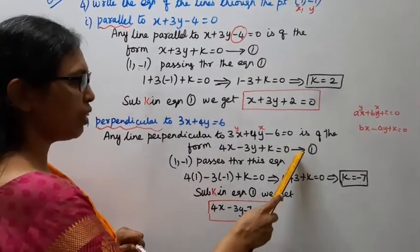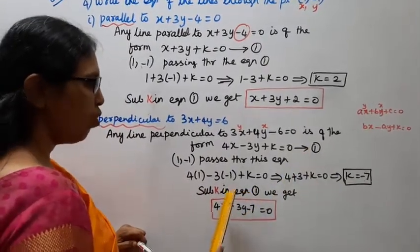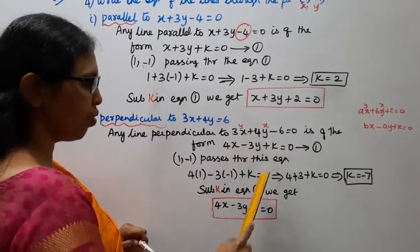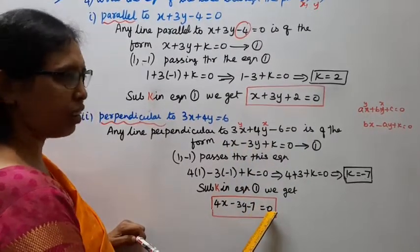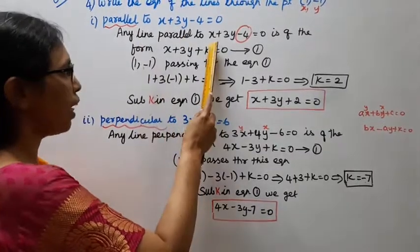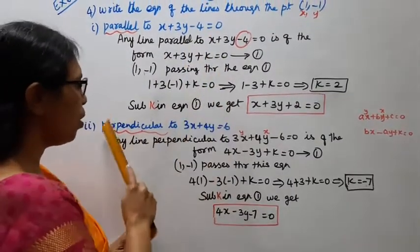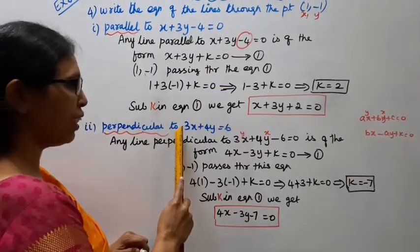Substitute K in equation 1: 4X - 3Y - 7 = 0. That's the perpendicular line.